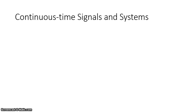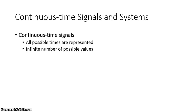Now let's talk about continuous time signals in more detail. With a continuous time signal, all possible times are represented over some range. So if we go from t=0 to t=5, every possible time in between is represented — whether 0.01 seconds, 0.02 seconds, and so forth. For each of those times, there's a value associated with it, and there's an infinite number of values that can be associated with those times.